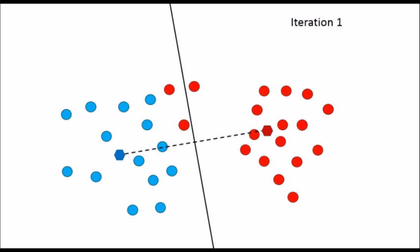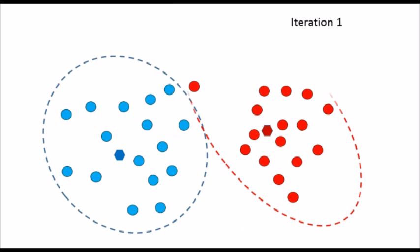The same step of computing distance between the two clusters is then repeated and a new boundary line is drawn. Note that since the centroids have shifted, so has this boundary line. Now note that these two data points that were previously in the red zone, since they now lie to the left of the boundary line, will now be placed within the blue cluster. This is how the clustering after the first iteration would look like.